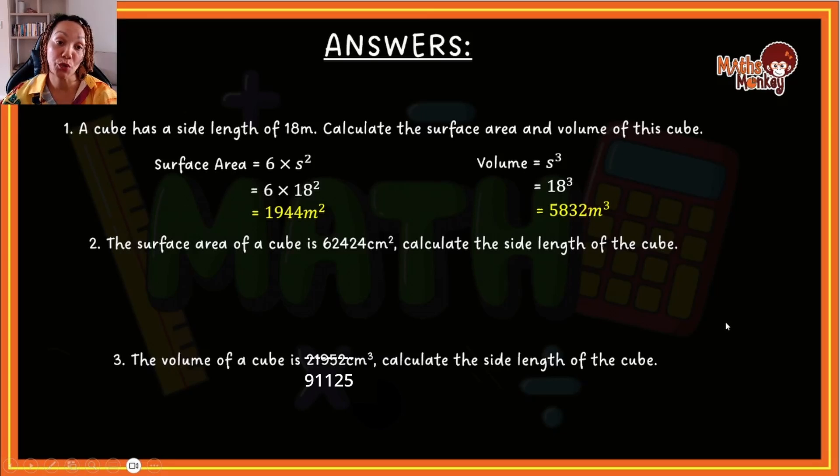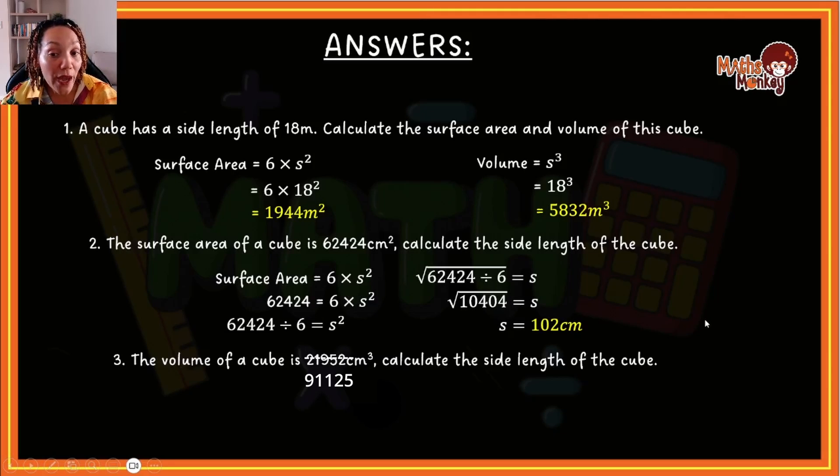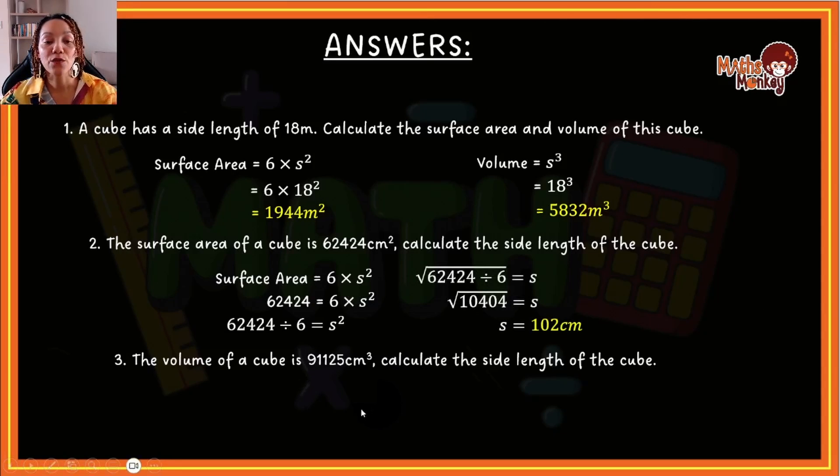Now let's do the questions where you had to work backward. Okay. So here for the surface area they've given us, so we substituted it in, divided it by 6, then square rooted the answer. And you should have gotten 102 centimeters for question two. So for the last question, the volume of the cube is 91,125. And we have to calculate the length. So there we have volume is equal s to the power of 3. If a cube rooted, we end up with 45 centimeters. Alright.